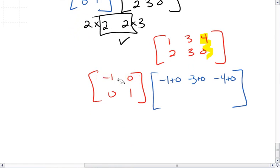For the second row, we take the second row of the reflection matrix and the first column of our polygon. 0 times 1 is 0. 1 times 2 is 2. We can then take the second row and the second column. 0 times 3 is 0. 1 times 3 is 3. And we can take the second row and the third column. 0 times 4 is 0. 1 times 0 is 0.